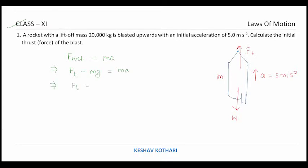Substituting values: 20,000 kg, g = 10 m/s², and acceleration = 5 m/s². On solving we obtain the thrust force as 3 × 10⁵ Newton.